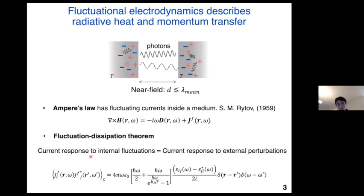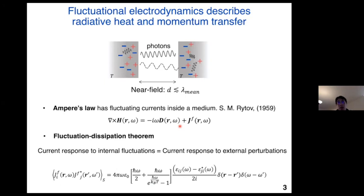In order to know the transport quantities, such as heat transfer and force, we need to know the correlation functions of these fluctuating currents, where S means the symmetrized correlation functions. To know this correlation function, we use the fluctuation dissipation theorem. The basic idea is that the current response to internal fluctuations — this correlation function — is the same as the current response to external perturbation, which is related to the dielectric function of the material as well as the temperature. By combining this with the macroscopic equations, one can determine the radiative heat transfer and also momentum transfer in the near field.